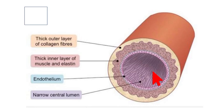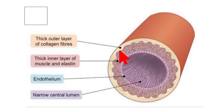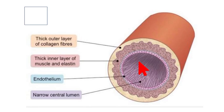The middle layer, tunica media, is the thickest in arteries near the heart. The thick elastic walls help to withstand pressure as blood comes directly out of the heart. Elasticity of the arterial wall helps it to stretch and recoil back.